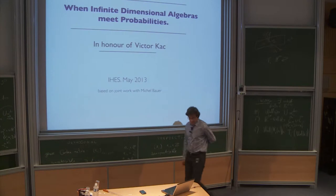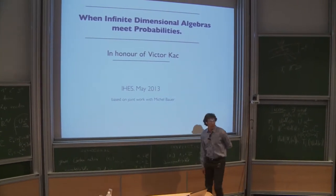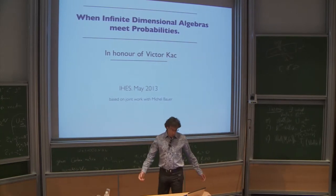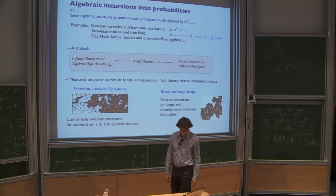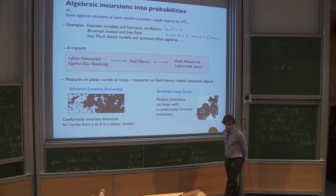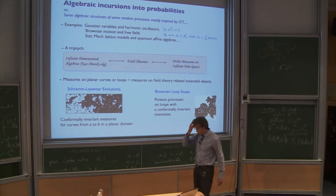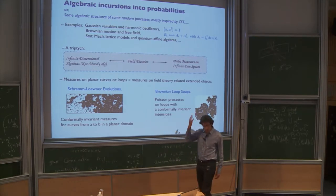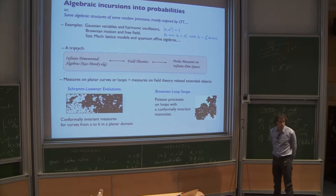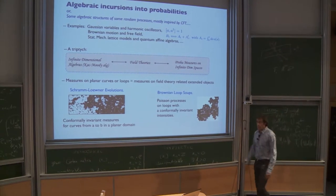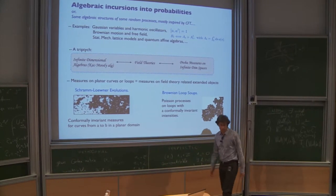I will discuss the connection between infinite-dimensional algebra and conformal field theory and probability. A good place to look for such connection is field theory, because in some way, if you think about Euclidean field theory in terms of statistical mechanics, Euclidean field theory is more or less a way to define or try to define a probability measure on an infinite-dimensional configuration space. That's what statistical mechanics does.